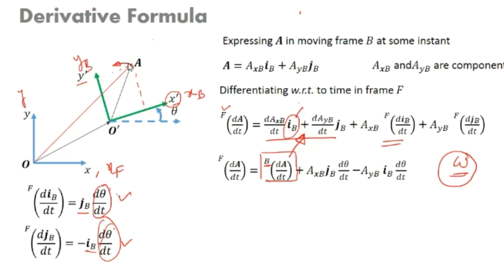Using the right-hand rule, curl your fingers along the rotation arrow so that the fingertips point in the direction of the arrowhead. The thumb direction tells you the direction of omega. For the case shown, curling the fingers along the rotation gives the direction of omega pointing outward — bahaar ki taraf — out of the plane.